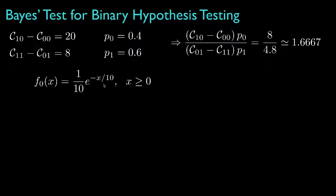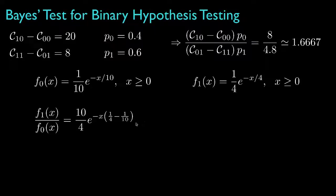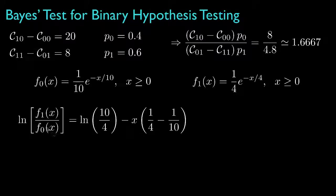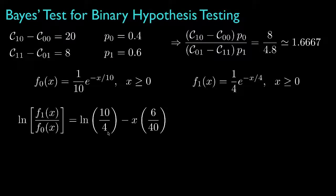Next, let's suppose that under hypothesis 0, the density for the observation is an exponential with a mean equal to 10, and under hypothesis 1, the density for the observation is an exponential with a mean equal to 4. This means that the likelihood ratio is (10/4) times e to the negative x times (1/4 minus 1/10), and we could use this as our test. But the non-linearity of computing the exponential can be avoided by applying the logarithm to both sides. In this case, the log-likelihood ratio is the logarithm of (10/4) minus x times (1/4 minus 1/10), and we can group those terms as 6/40. This should then be compared to the logarithm of the threshold computed from the costs and prior probabilities.